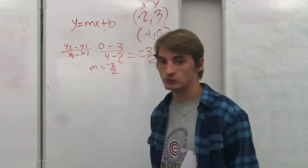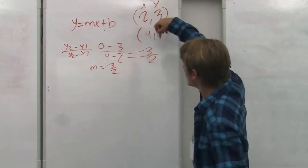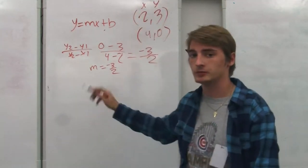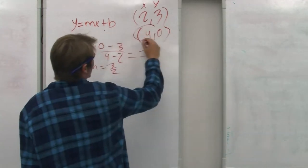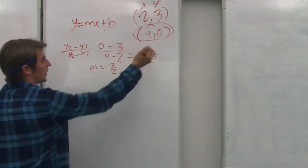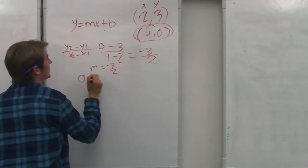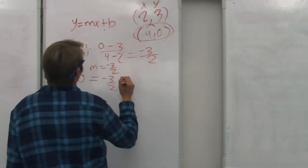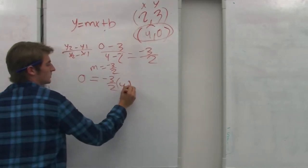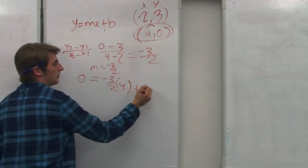To get b, all you have to do is plug in one of these points and then solve for the equation. So, let me use this point right here. So, y0 equals negative 3 halves x4 plus b.